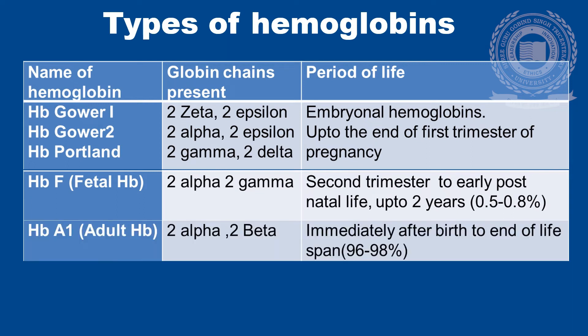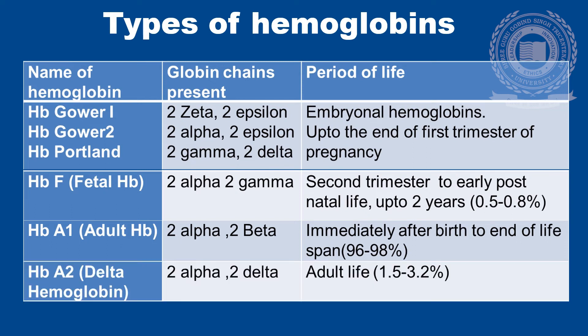Then we come to adult hemoglobin, or HbA1, which is composed of two alpha and two beta chains. It forms immediately after birth and is present till the end of the lifespan, comprising 96 to 98% of the total hemoglobin. Then there is delta hemoglobin, HbA2, composed of two alpha and two delta chains; it is also adult hemoglobin and is present in the amount of 1.5 to 3.2% of the total hemoglobin.